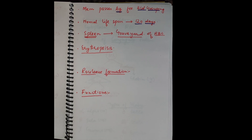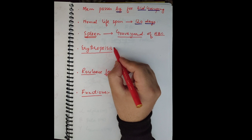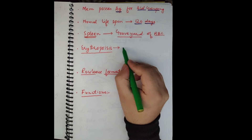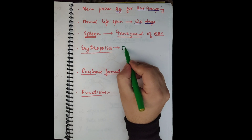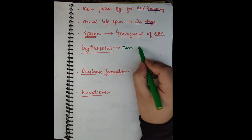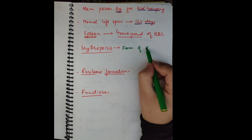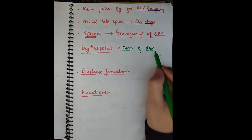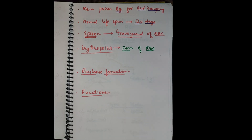Erythropoiesis is the process of formation of RBCs. How this process works will be discussed in subsequent lectures.